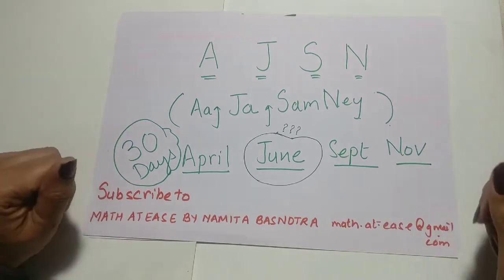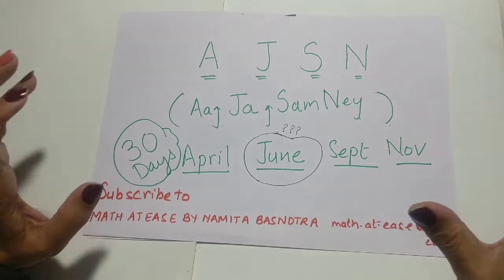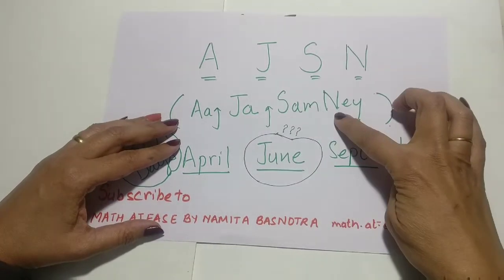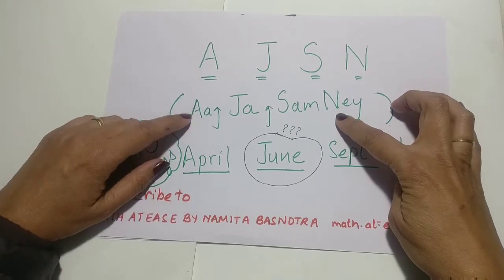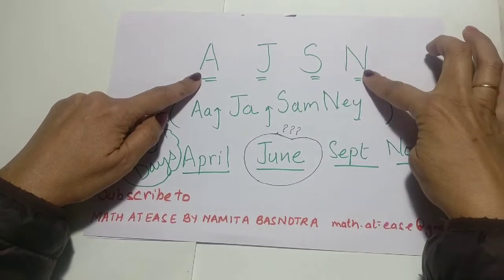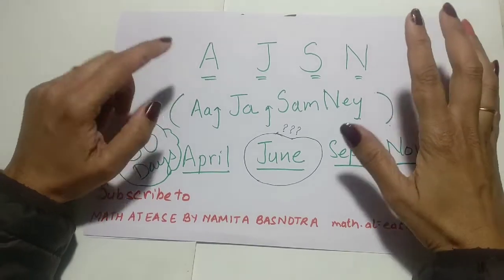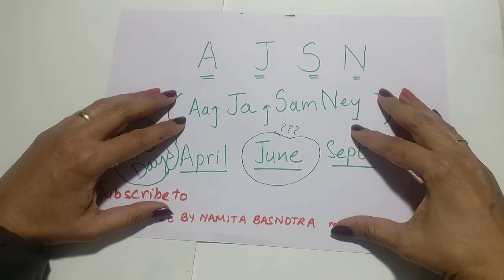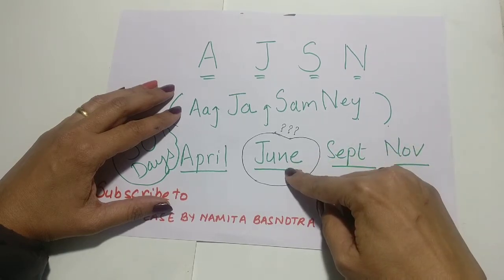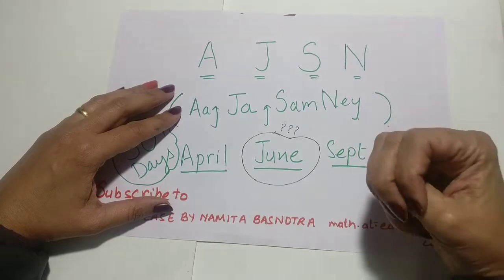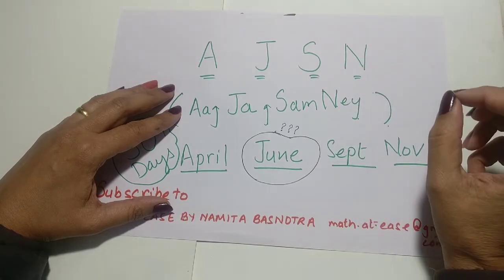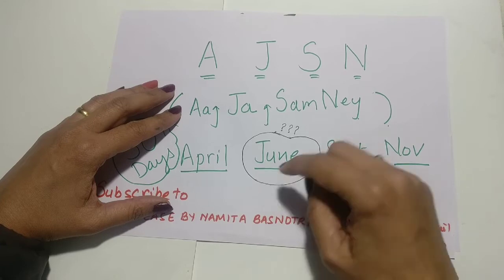If you still find it hard to remember all four, you can make a mind-mapping mnemonic. I made one for myself: 'Aja Samne.' In this, A stands for April, J stands for June, S stands for September, and N stands for November. One important note: there are three months starting with J — January, June, and July — so remember that the J in AJSN stands specifically for June.